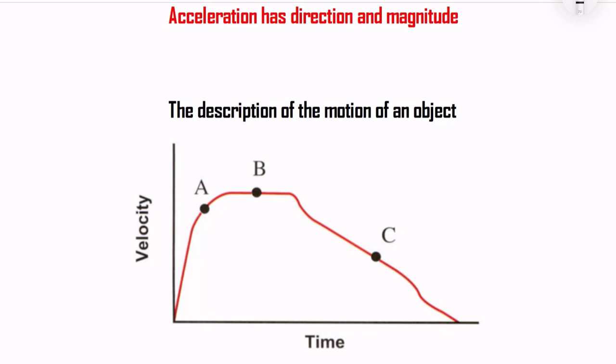Now we are going to talk about acceleration. Acceleration has direction and magnitude, which means acceleration is a vectorial quantity — similar to velocity, which has direction and magnitude, whereas speed has only magnitude.